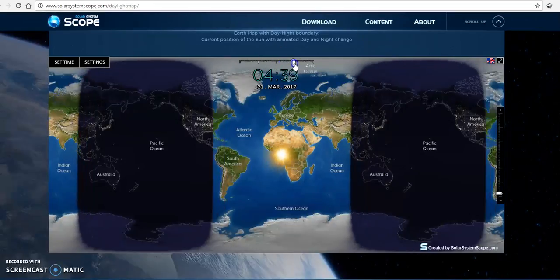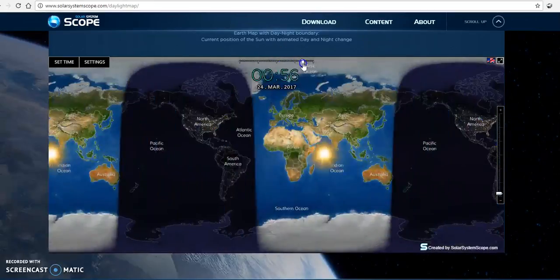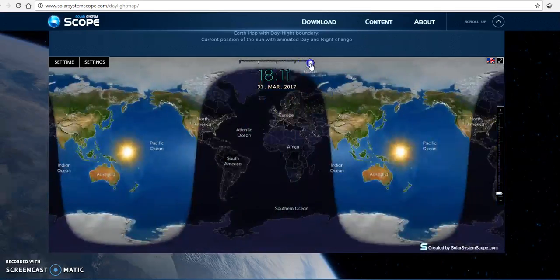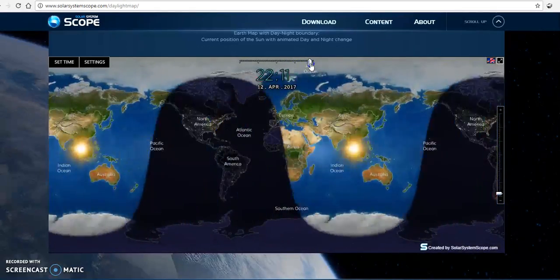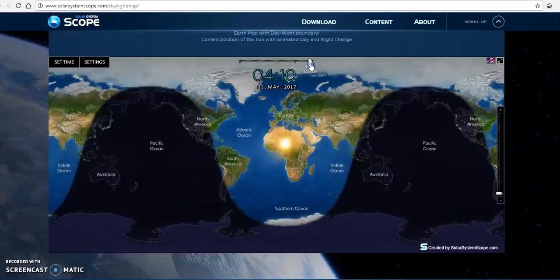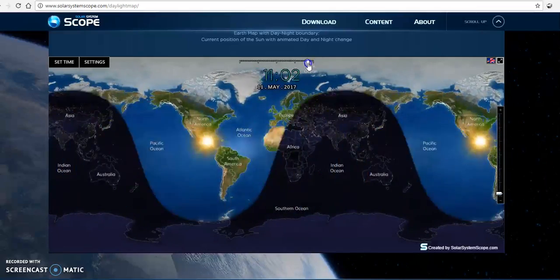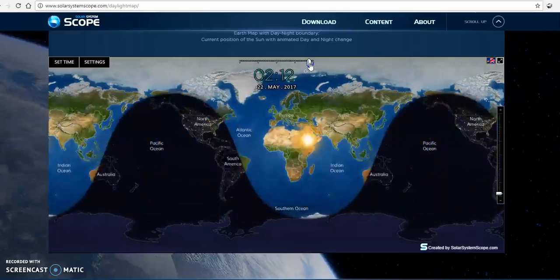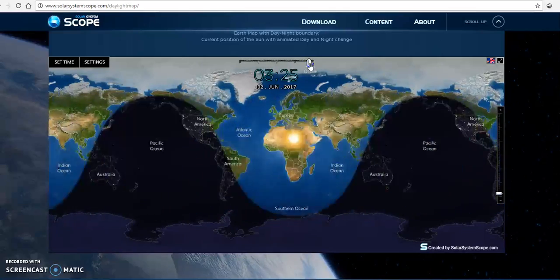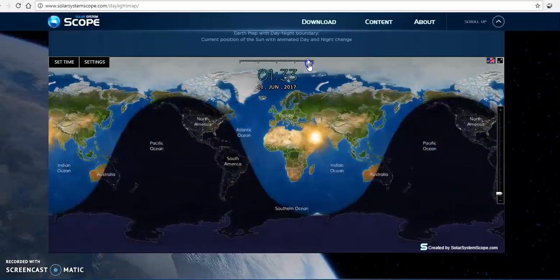So now let's go ahead and move this forward to June. We're going to fast forward this in time, and what we should be seeing is that the lighter proportion of the shape should be greater in the northern hemisphere and less in the southern hemisphere. So June 21st.